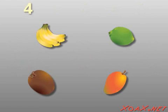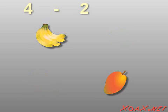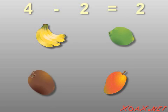Suppose that we have four pieces of fruit: one, two, three, four, and we eat two of them - one, two. Then we have one, two pieces of fruit left. So four minus two is two.